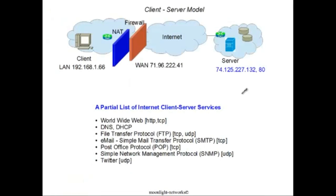This is a partial list of client-server services that run on top of the internet. The world wide web we've talked about extensively, but we also discussed DNS and DHCP. File Transfer Protocol and email use this model as well — SMTP is the protocol used to deliver messages to an email system, and Post Office Protocol is used to retrieve them. SNMP is used to manage internet elements, and of course there's Twitter as well.